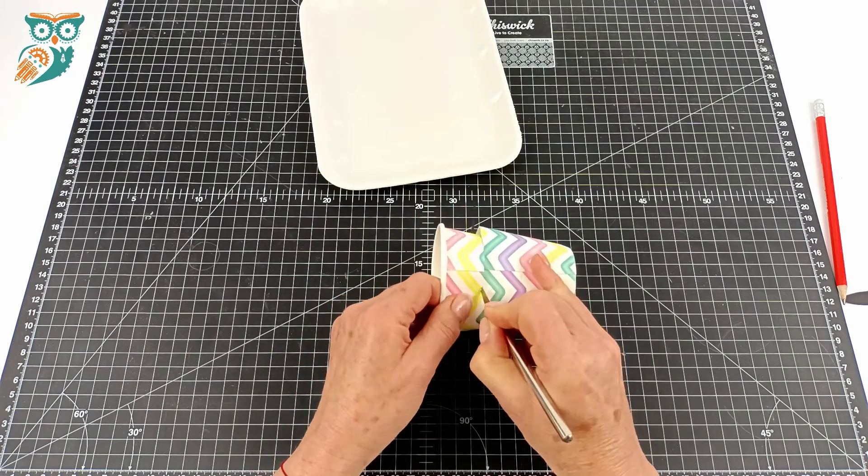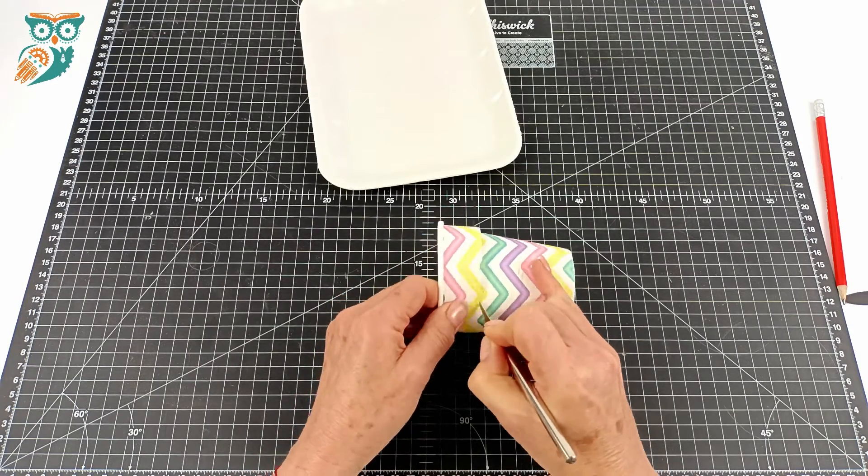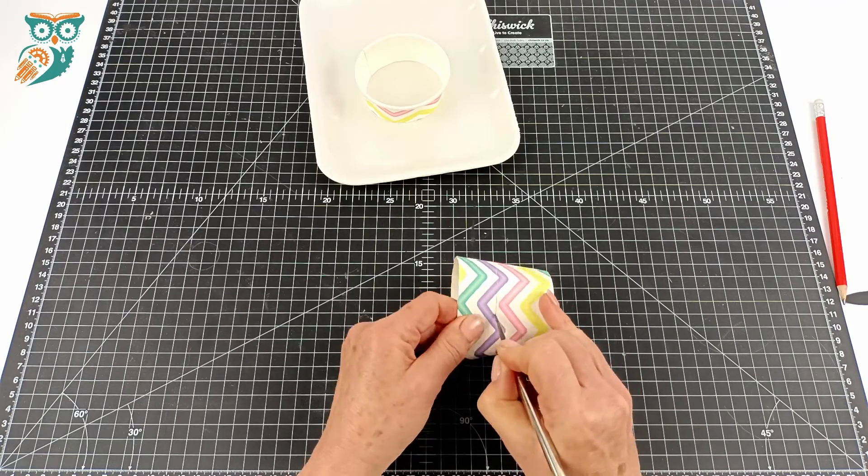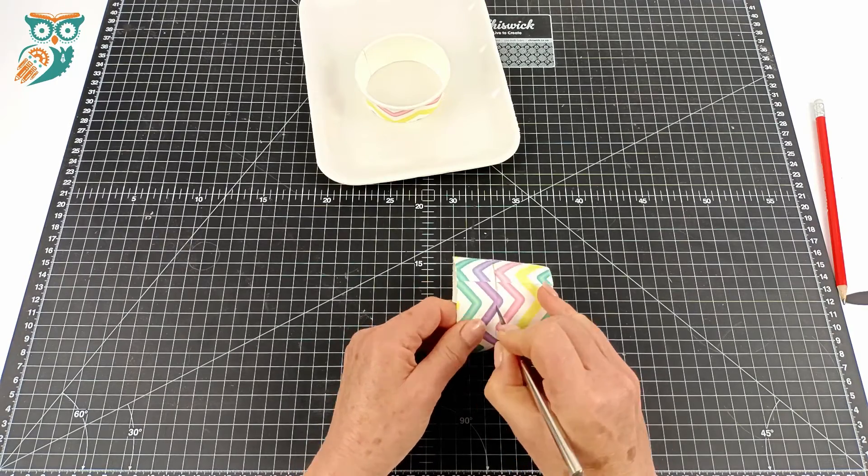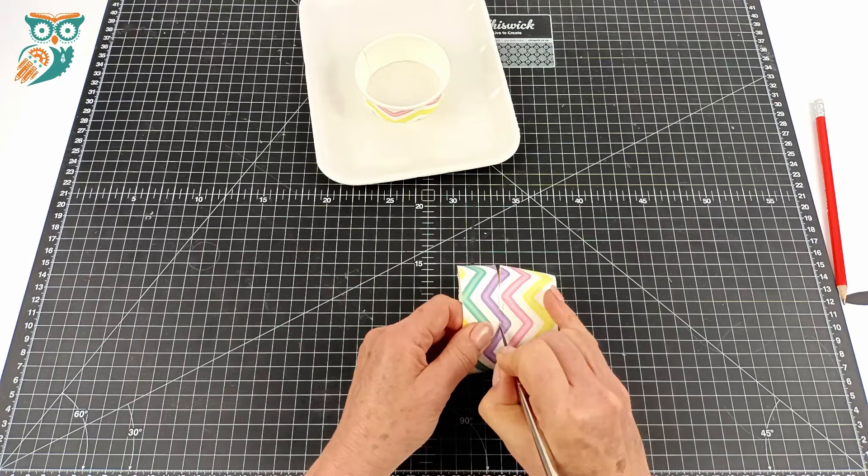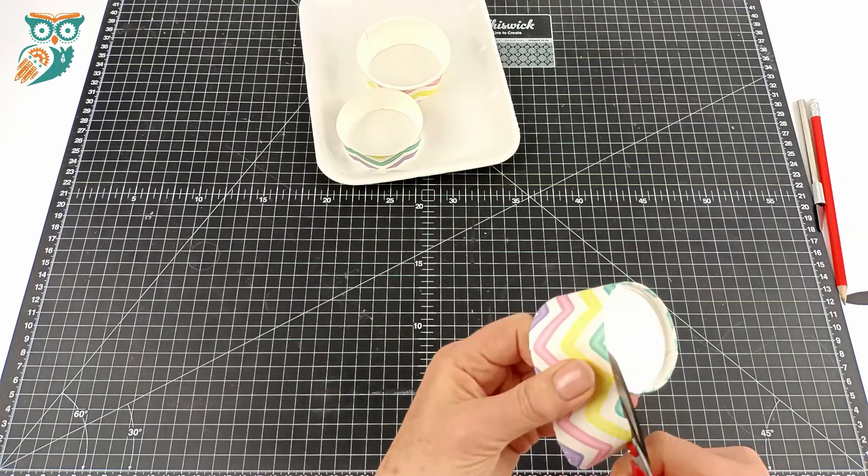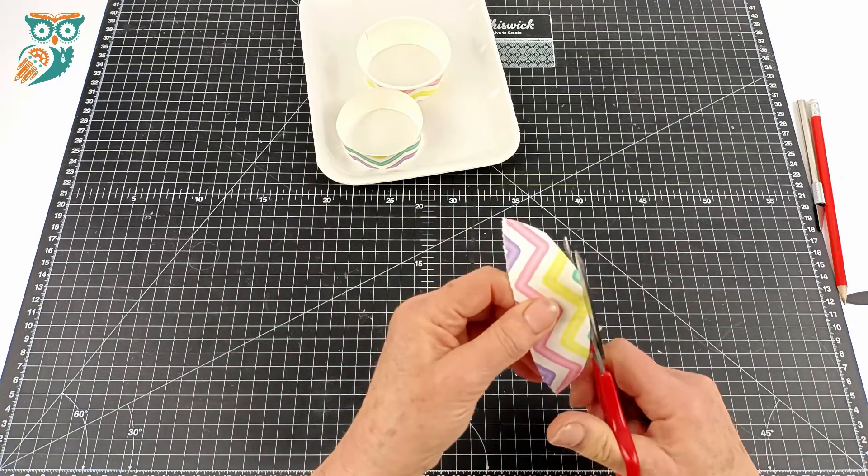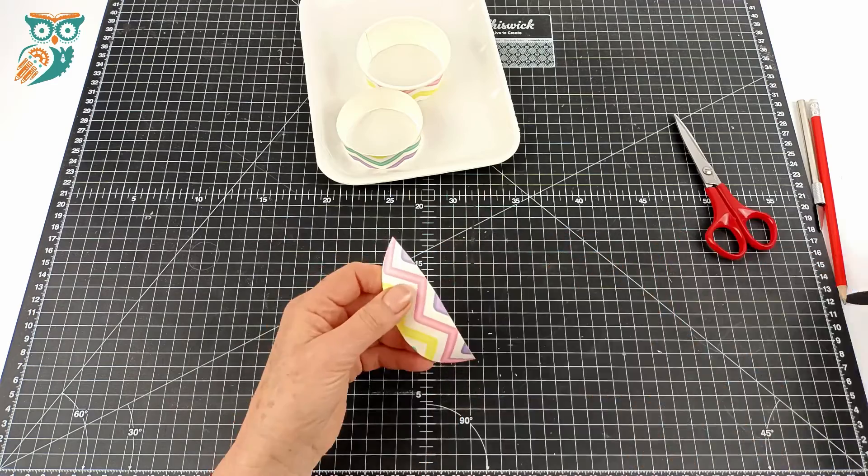Now we're using an exacto knife. If you have younger kids, this is a step that should be done by adults. We're going to cut off those two rings and now we're just going to cut out that little half circle that we're going to be using for our windshield.